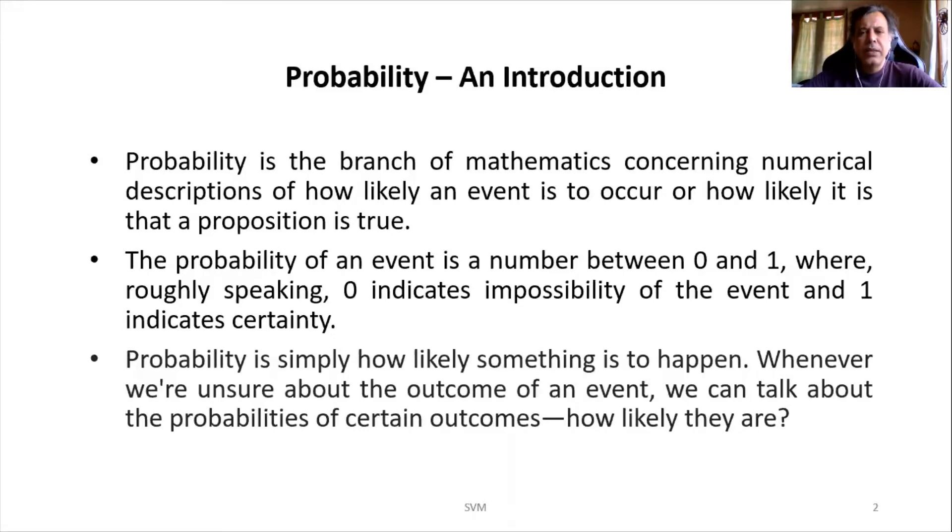Zero indicates that there is no chance—in the sense it becomes an impossible event. And when it is 1, it becomes a sure event. Basically, probability is about something which is likely to happen. And what is that likeliness? How much it is? You are trying to measure it.